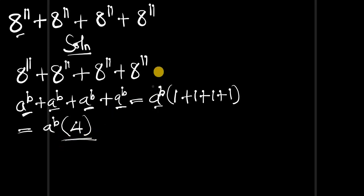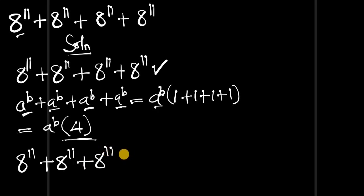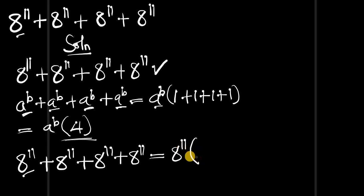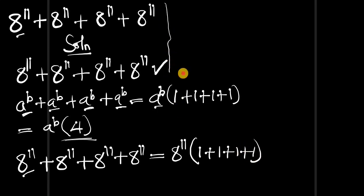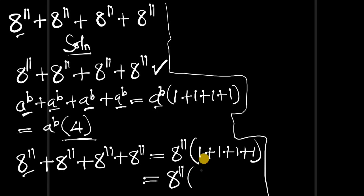Using that same identity, 8 to the power of 11 plus 8 to the power of 11 plus 8 to the power of 11 plus 8 to the power of 11 equals 8 to the power of 11 times (1 plus 1 plus 1 plus 1), which is simply 8 to the power of 11 times 4.